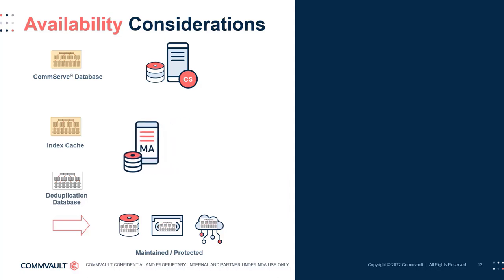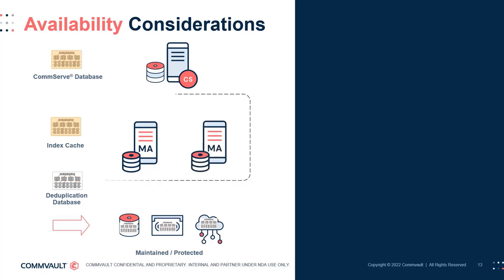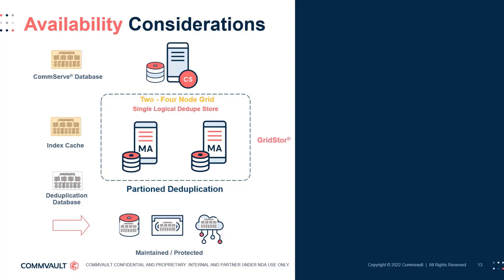To provide a higher level of availability for media agents that use deduplication, always design with two, three, or four nodes in a grid using partition deduplication. Partition deduplication distributes the DDB across multiple media agent nodes, providing partition failover by automatically redirecting the deduplication process if one partition is temporarily unavailable. Media agents also utilize grid store technology to provide automatic path failover should a media agent or storage target become inaccessible.